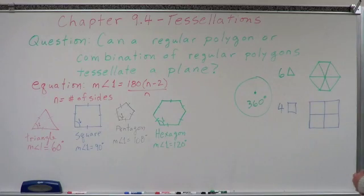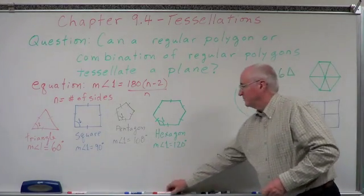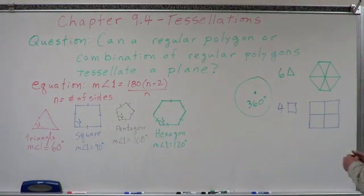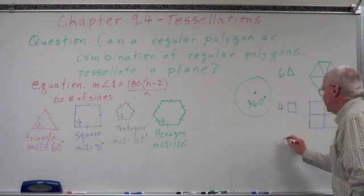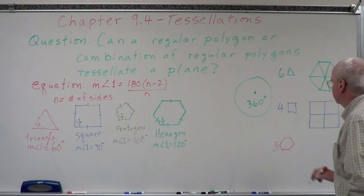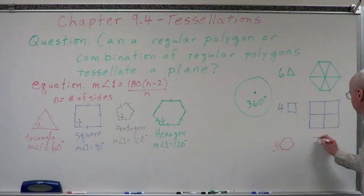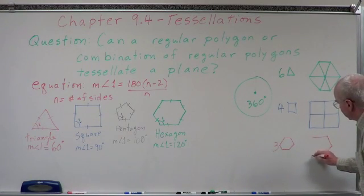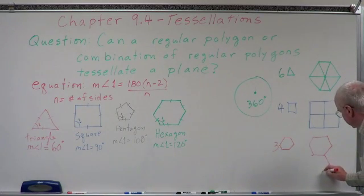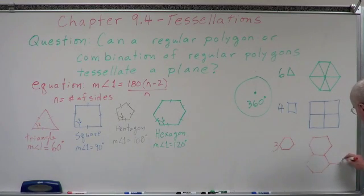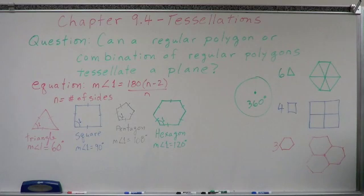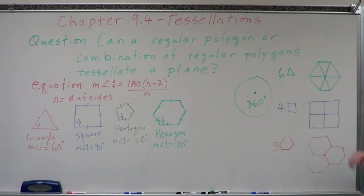How about a hexagon? Take a hexagon — divide 360 by 120 and you get 3. So we can take three hexagons and put them together. We have three hexagons here, and another one there, another one there. We can simply transform, translate, and rotate these hexagons around to tessellate a plane.